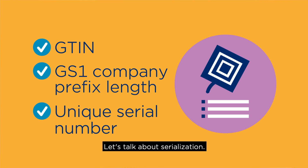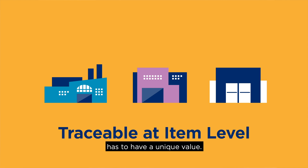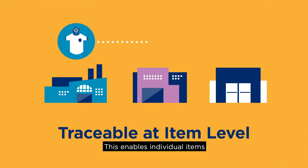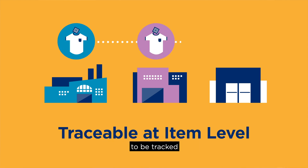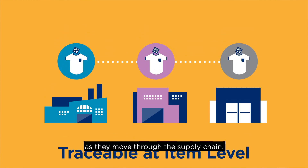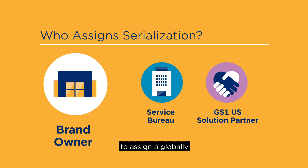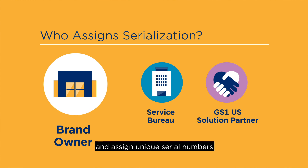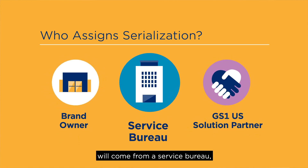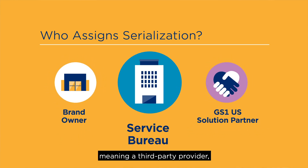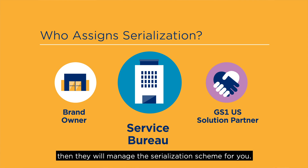Let's talk about serialization. Each RFID tag has to have a unique value. This enables individual items to be tracked as they move through the supply chain. GS1 standards specify that it is the responsibility of the product brand owner to assign a globally unique GTIN to each product and assign unique serial numbers to each item. If your RFID tags will come from a service bureau, meaning a third-party provider, then they will manage the serialization scheme for you.